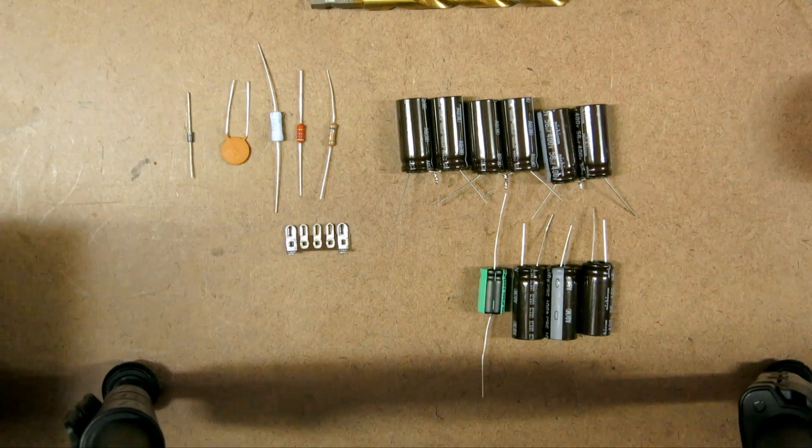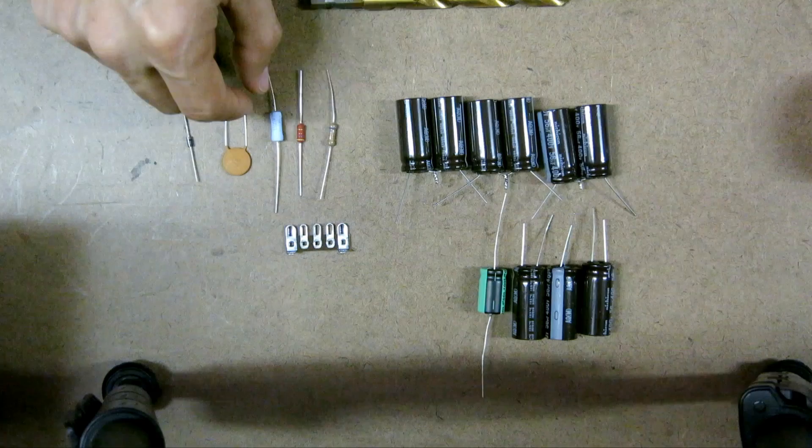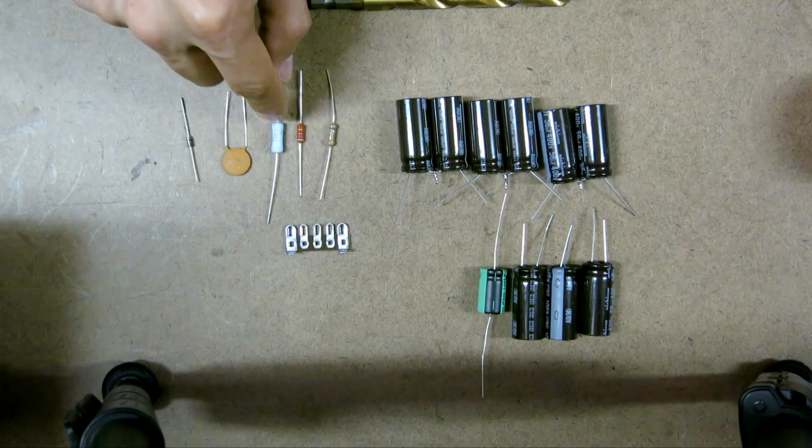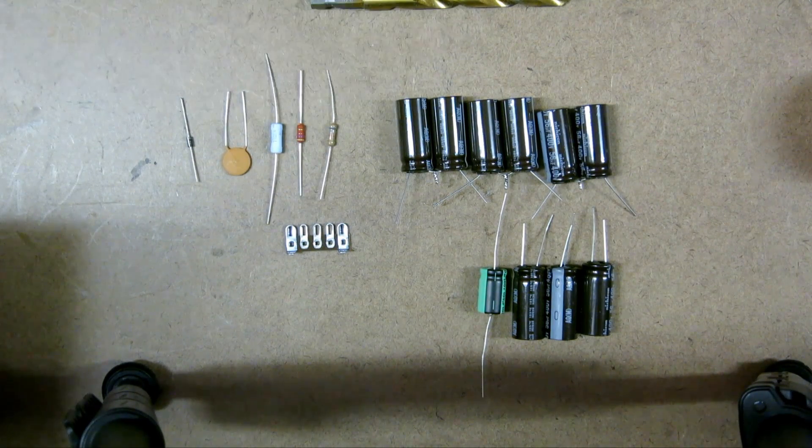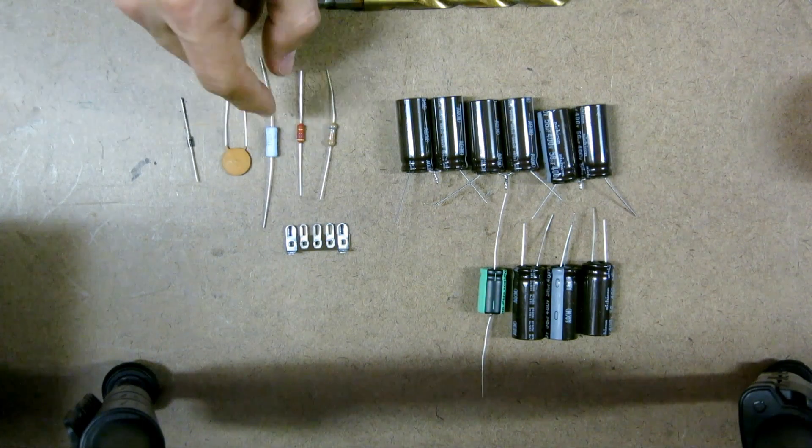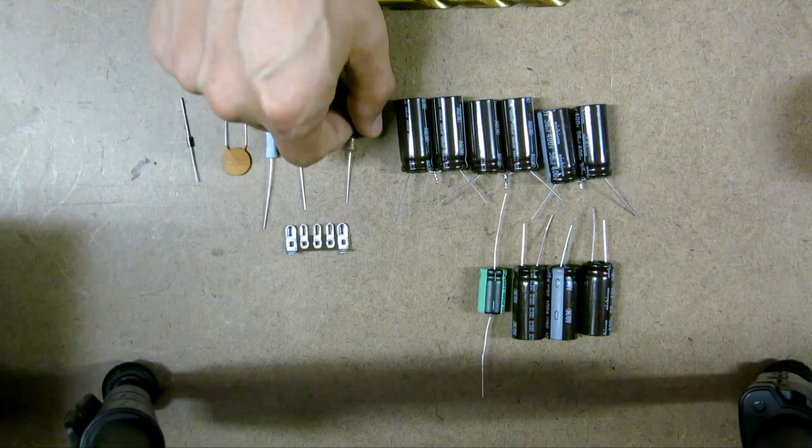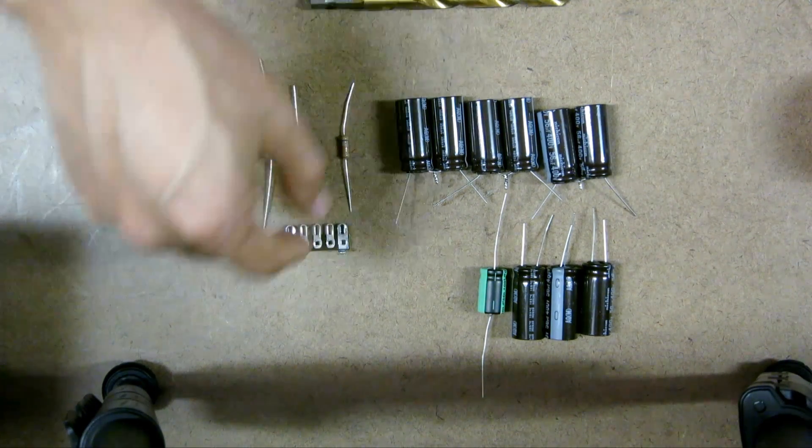So here are all my components right here. The diode, the 0.02 microfarad cap, I also have the 11.21 watt resistor right there. That is the 4.7K, 6.8K.